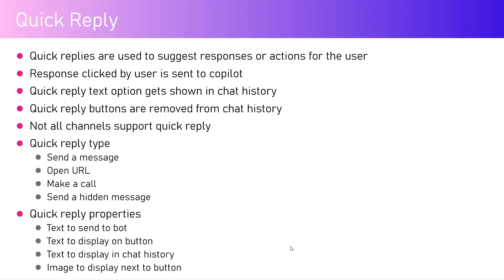You can also send a hidden message using the quick reply type. I'm going to go through all these options to make you aware of what's available. For quick reply properties, there are multiple things: you first suggest a response shown as a button; on click, different text may flow to the copilot. The properties are: text to send to bot, text to display on button, text to display in chat history, and image to display next to the button.